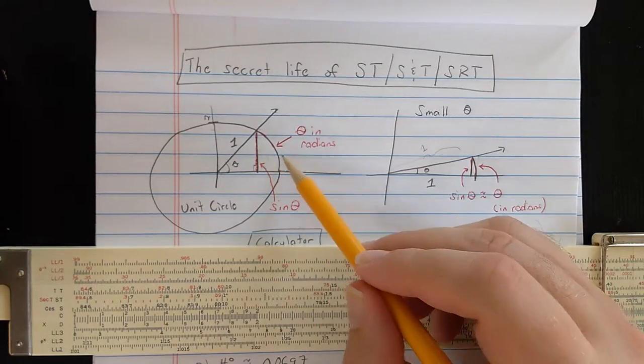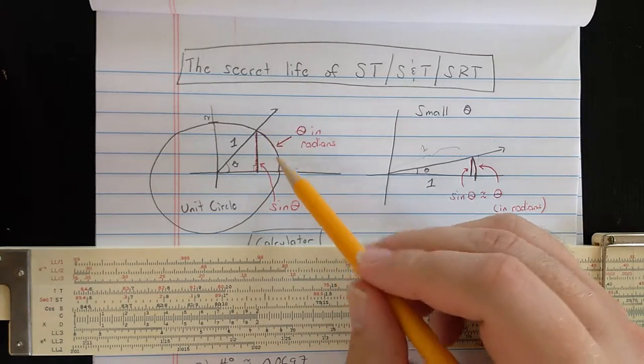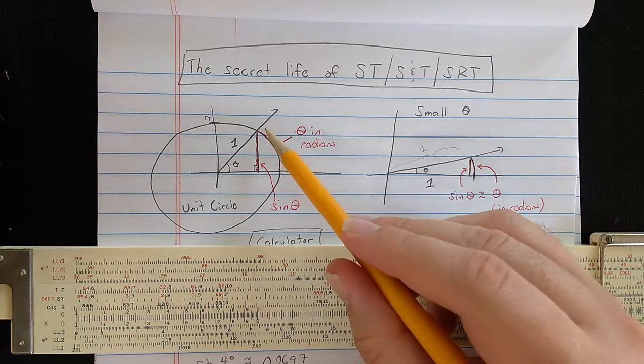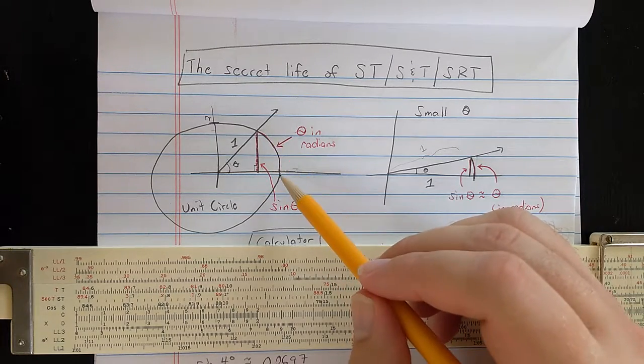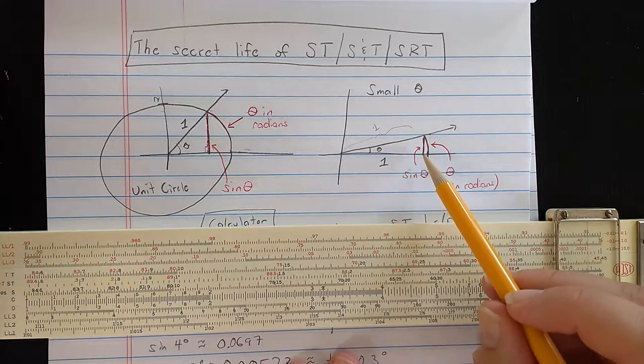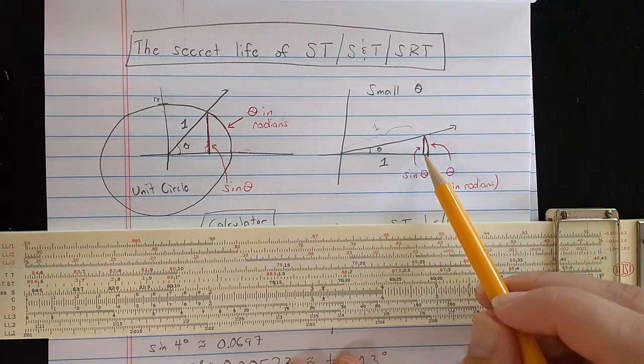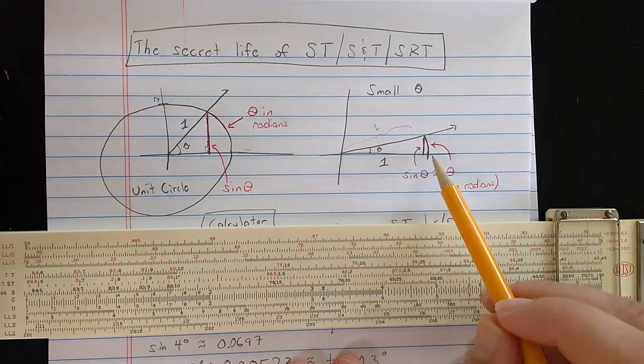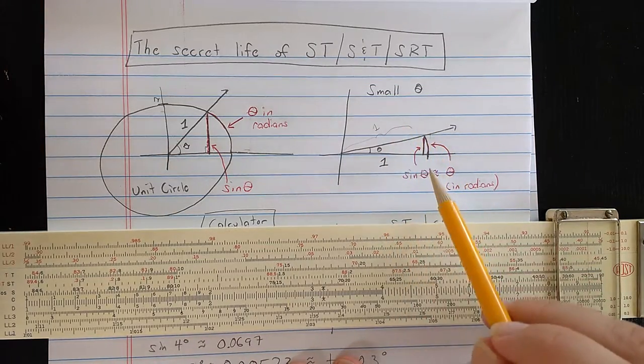Now you can see that this height and this arc have a significantly different length for theta, which is not small, but if you look at the picture on the right, what you notice is that when theta is small, imagine the angle starts at zero and continues getting larger.